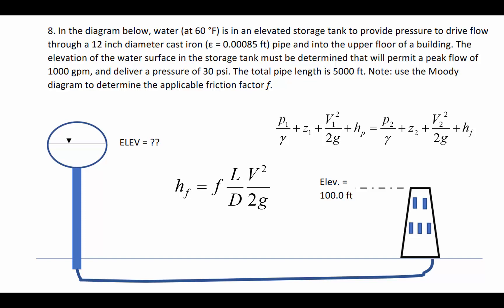Thanks to those of you who have your webcams already turned on — it makes things a little bit more comfortable and less awkward when I'm teaching. Gavin asks what H_sub_P on the left side is. That is pump head. If there was a pump between the tank and the building, you'd add the pump head with H_sub_P. On the right-hand side we sometimes have the turbine term H_sub_T, but in this case there's no pump and no turbine, so you'll cancel out H_sub_P to zero.